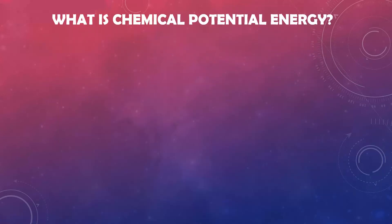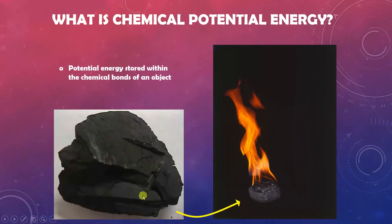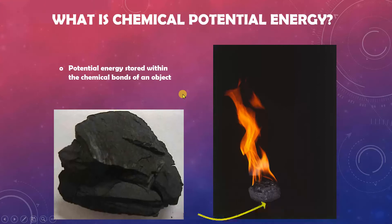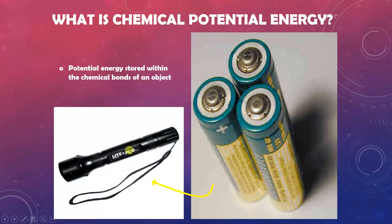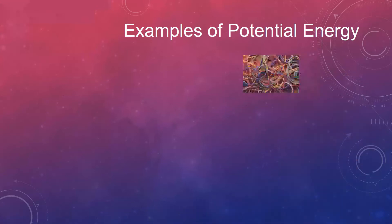Chemical potential energy is the energy stored in chemicals. For example, the energy stored in coal is chemical energy — it is stored in the chemical bonds. Batteries also store chemical potential energy.